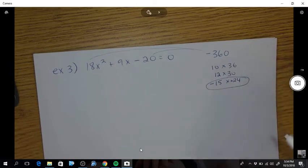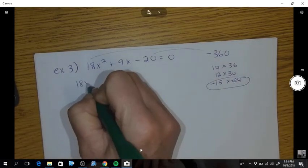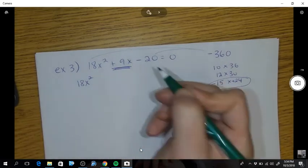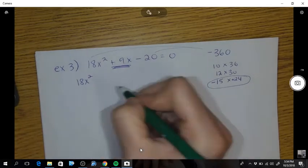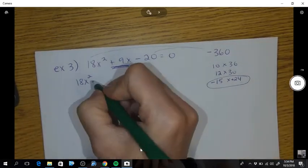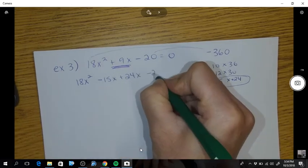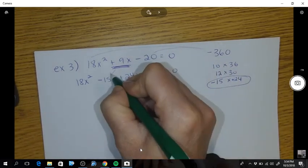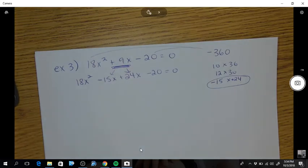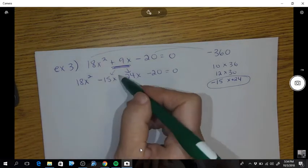Okay, so now, in this method, all I'm going to do is rewrite that, 9x, as those two. So minus 15x plus 24x. Did you see? I just rewrote 9x in a different way, breaking it down.